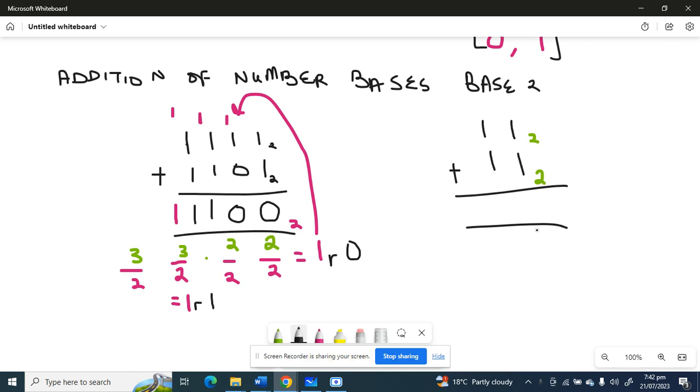For example, here was that one plus one, that gives us two. So two is not zero or one, so we're going to have to divide by two because we're dealing with base two. Two divided by two, that is one, remainder zero.